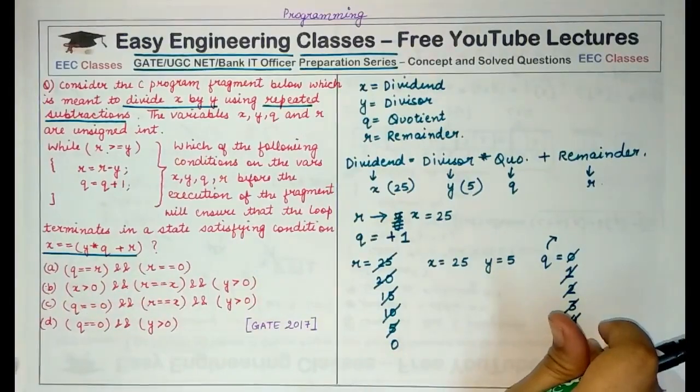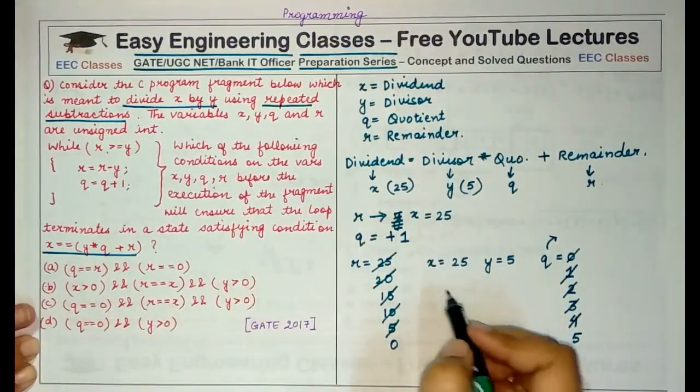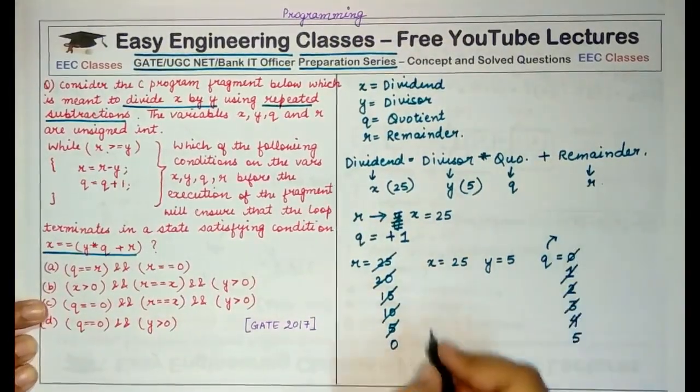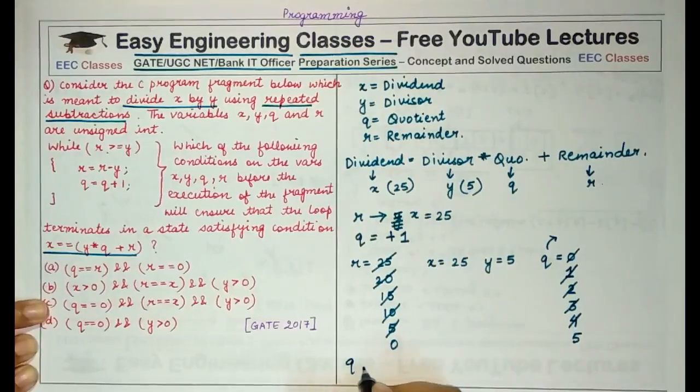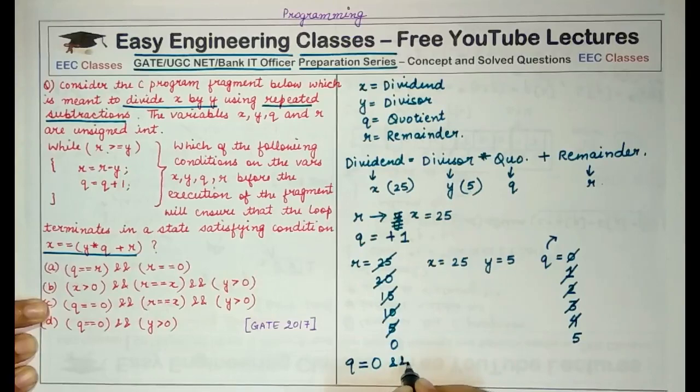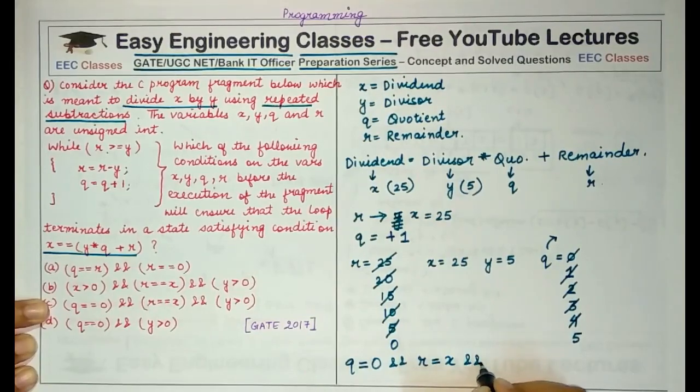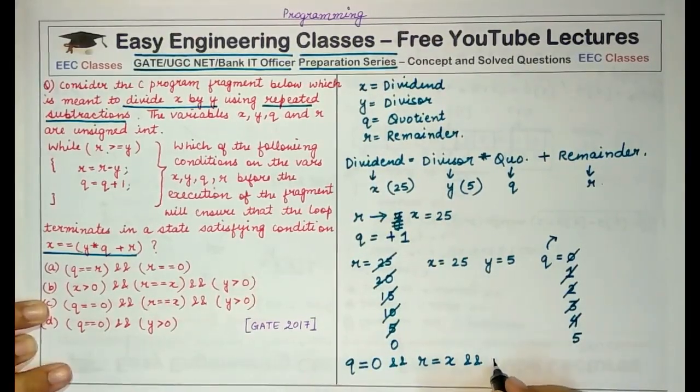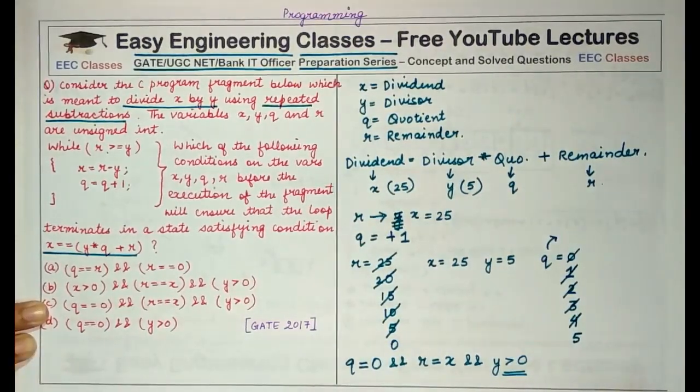So what should be the initial conditions that must hold? The conditions that we imposed: we made Q equal to 0 and we initialized the value of R with X and we must also ensure that the value of divisor should be greater than 0 because this is the basic rule of division.